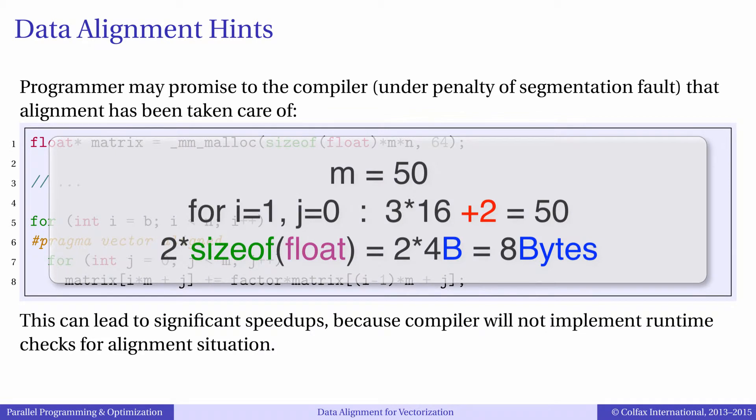For example, M equals 50. Then for I equals 1, matrix element J equals 0 will be offset by 50 minus 3 multiplied by 16, meaning 2 elements, or 2 multiplied by 4 equals 8 bytes from an aligned boundary.